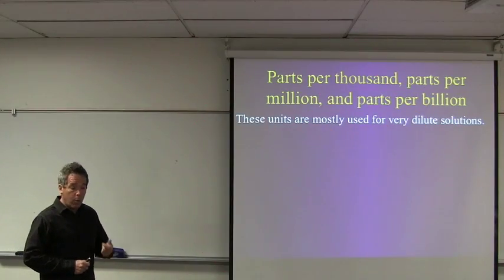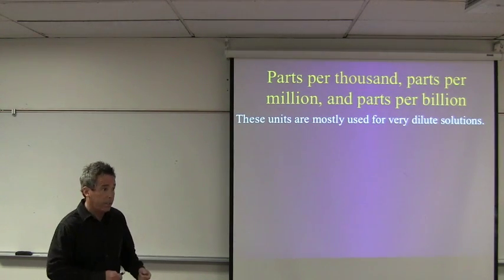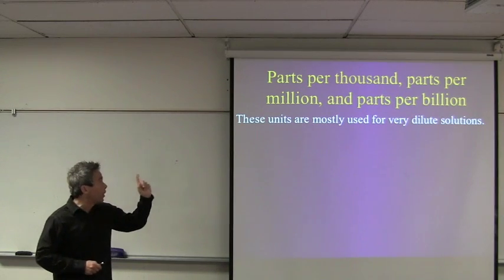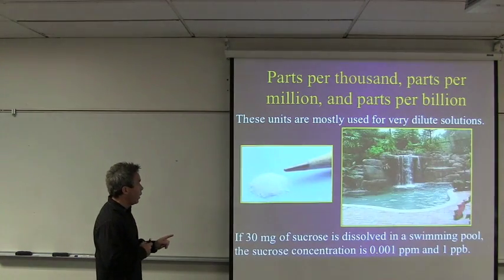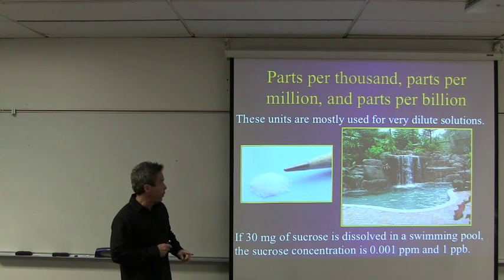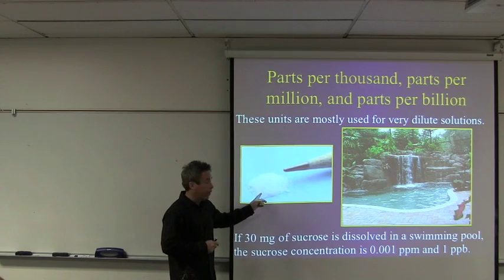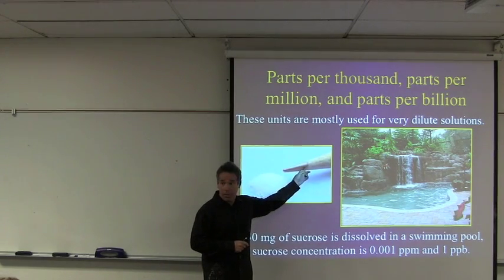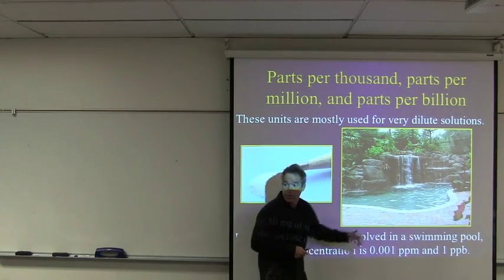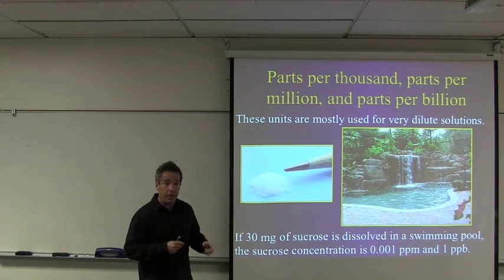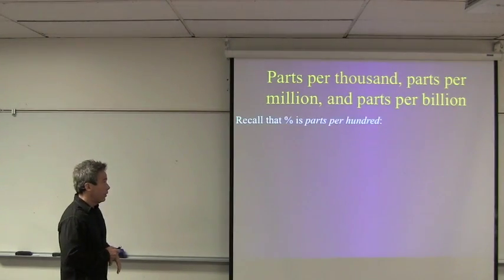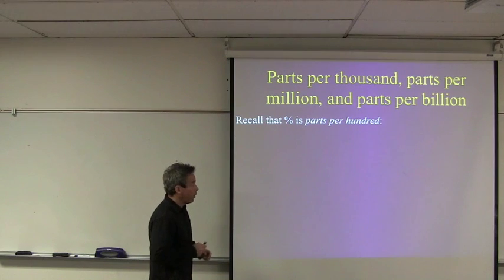And I get 2.7 percent, and I put percent W/V, or spell out weight to volume. Let's think about what that means. That means there's 2.7 grams of potassium iodide for every hundred milliliters of solution. Now that we know percent, which is the same as parts per hundred, it's really easy to understand parts per thousand, parts per million, and parts per billion. I'll give you an example when you'd use this. You'd use these units for very dilute solutions.